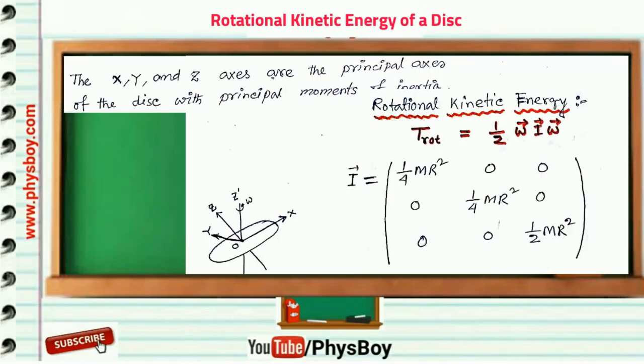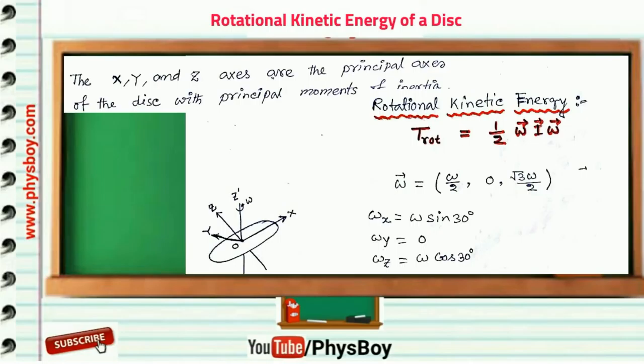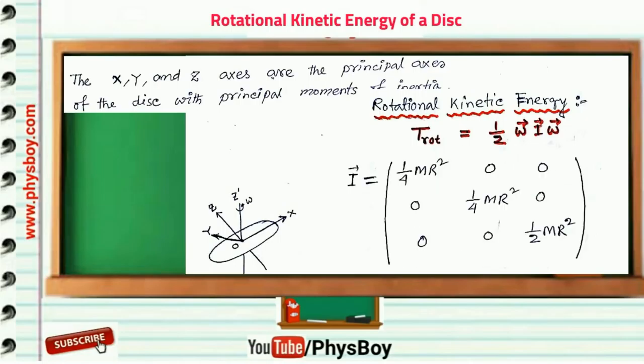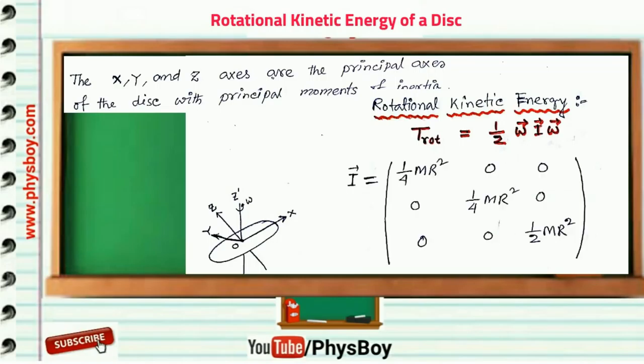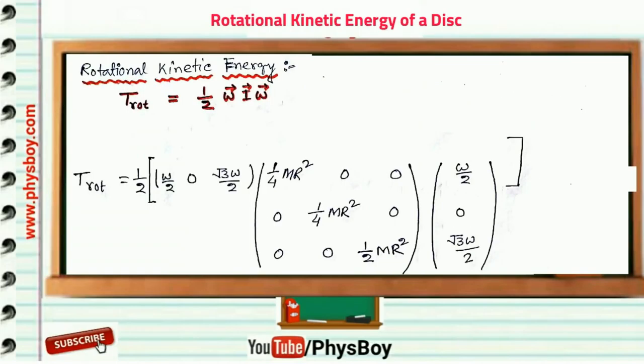So rotational kinetic energy can be written as 1/2 omega I omega. Now we have both omega and I matrix. Insert these two matrices into this equation, we get this.